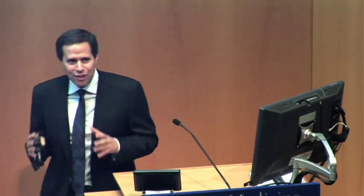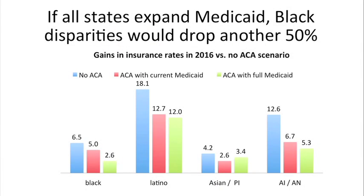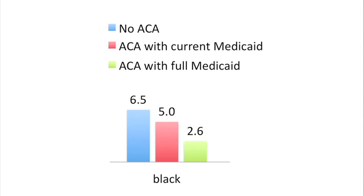The lowest hanging fruit here is Medicaid coverage. States can opt in to expanding Medicaid to cover these adults, and 23 states did not. It turns out those states are disproportionately populated by African Americans without health insurance. This same study shows that if all non-expanding states expanded, the gap between blacks and whites would drop an additional 50%.